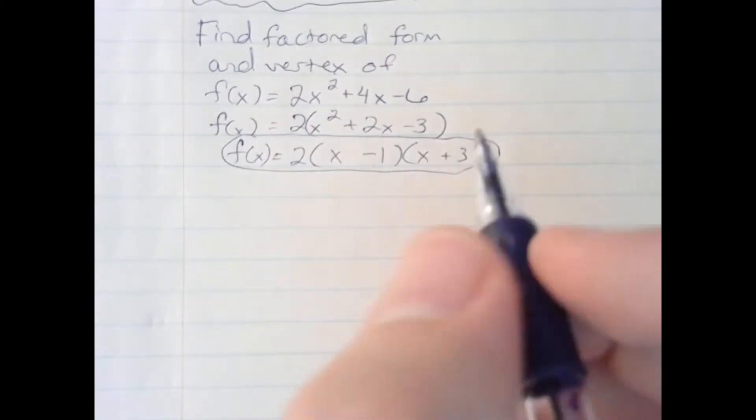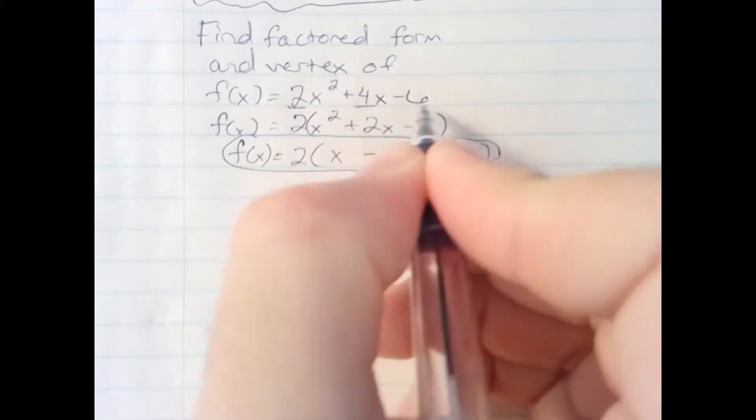Now, to find the vertex, I need to go back to the original problem, noting my a, b, and c numbers.